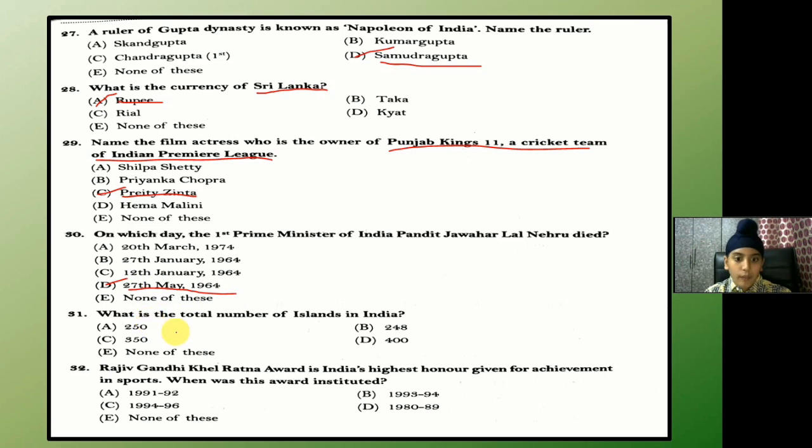What is the total number of islands in India? The answer is B — 248.